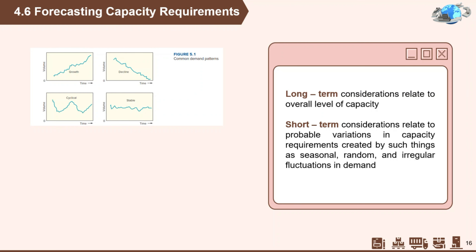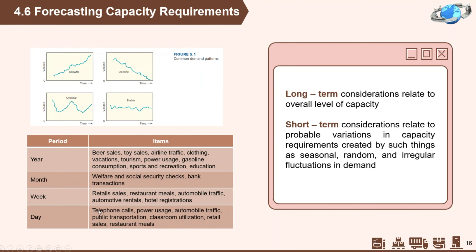On the other hand, short-term capacity needs are less concerned with cycles or trends and more with seasonal variations or other variations from average. These deviations are particularly important because they can place a severe strain on a system's ability to satisfy demand at some times and yet result in idle capacity at other times. An organization can identify seasonal patterns using standard forecasting techniques. Although commonly thought of as annual fluctuations, seasonal variations are also reflected in monthly, weekly, and even daily capacity requirements. The table here provides some examples of items that tend to exhibit seasonal demand patterns.